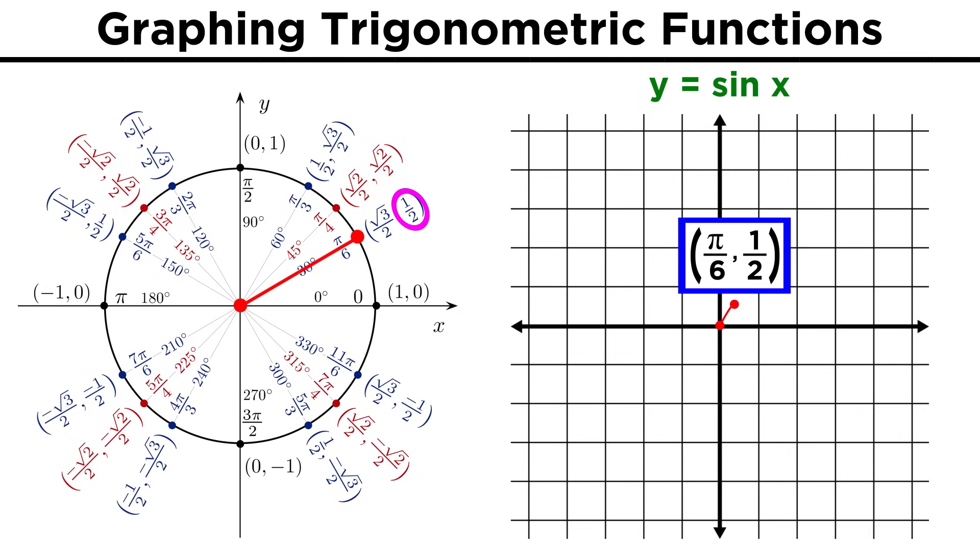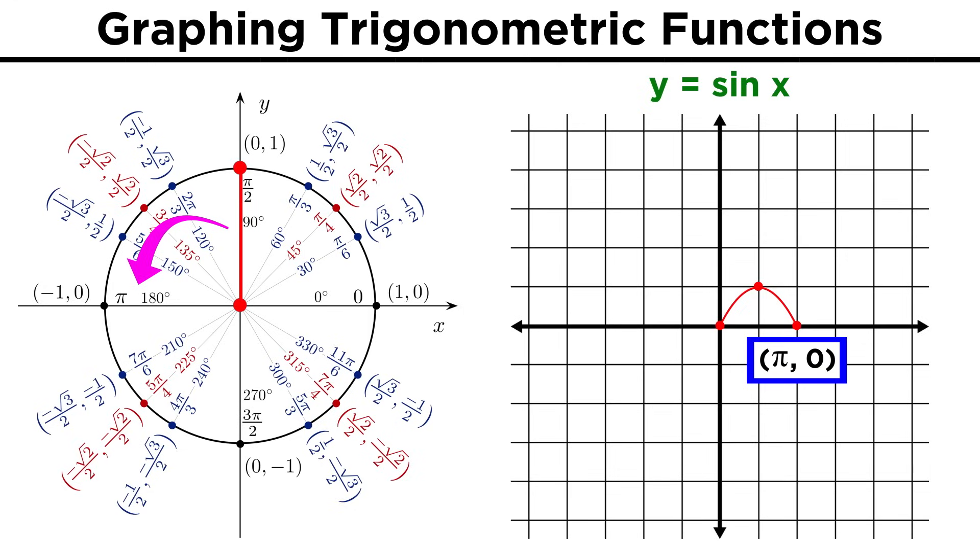When x is pi over six, y is one half. When x is pi over three, y is root three over two. When x is half pi, y is one. Then, as we move through quadrant two of the unit circle, the sine values start to go back down, until we get to x equals pi, where y is again zero.